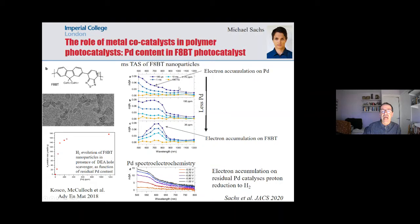We've been trying to understand why that is, and so we can see some photophysics here for F8BT particles as a function of palladium content. What you can see is that if you don't have any palladium, you see long-lived electrons sitting on F8BT in the presence of a hole scavenger to take the holes away. But in the unpurified material, the electrons don't sit on the F8BT — they sit on the palladium. This is the spectra of reduced palladium, clearly showing that in this system the electrons end up on the palladium to drive the proton reduction.